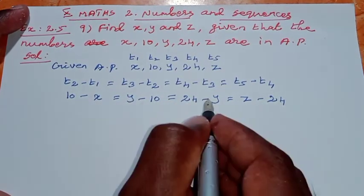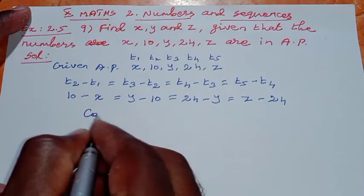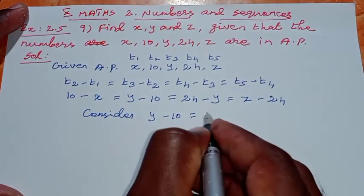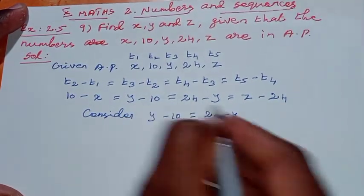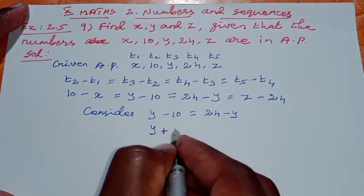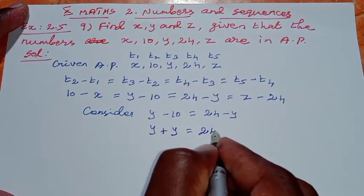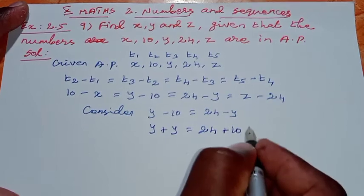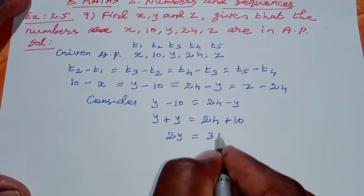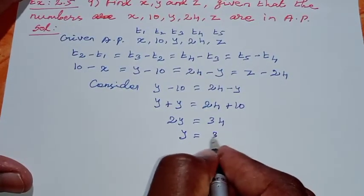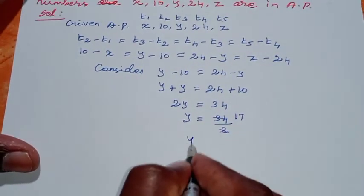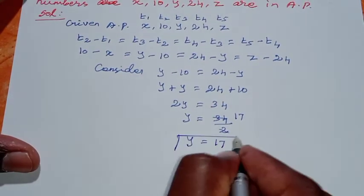Now consider y: y minus 10 equals 24 minus y. Bringing y to the left side: y plus y equals 24 plus 10, so 2y equals 34. Therefore y equals 34 divided by 2, which gives y equal to 17.